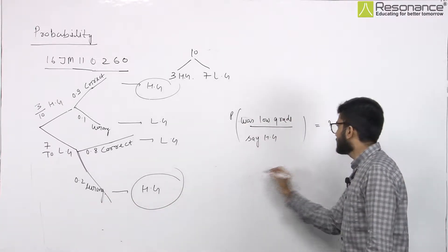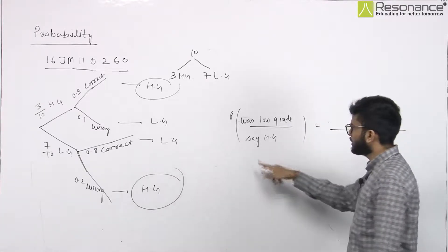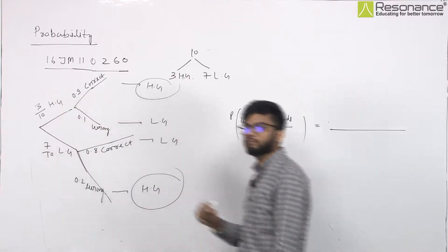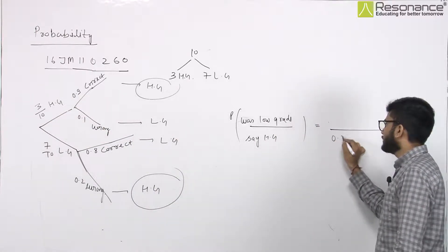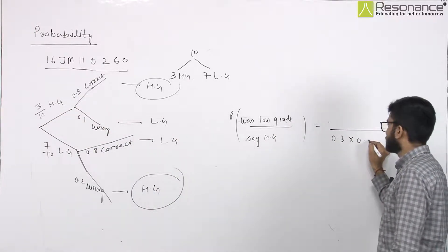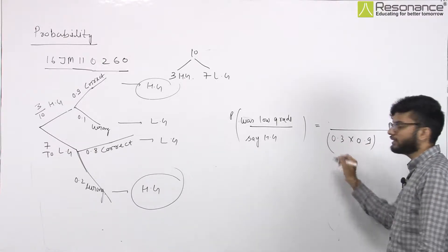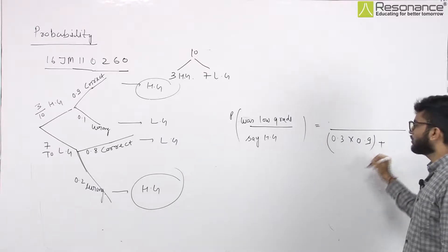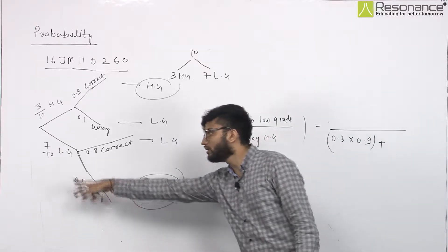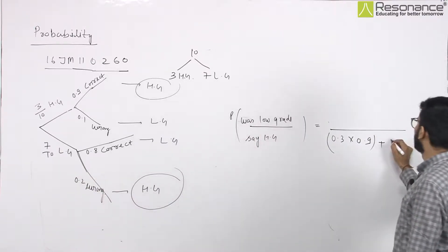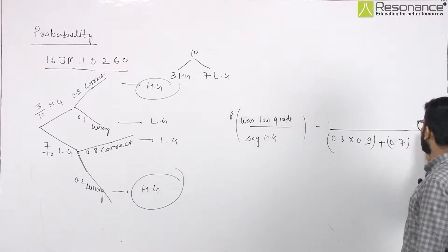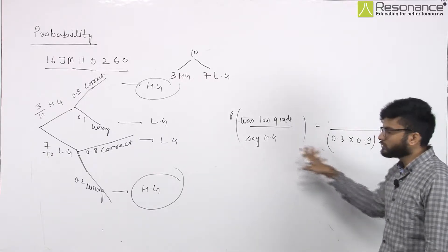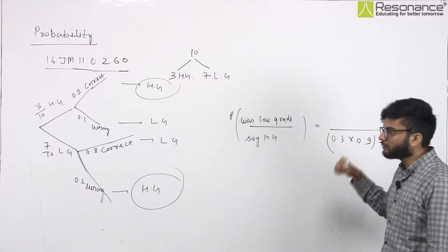So if we have a chance of high-grade, 0.3 into 0.9. These are my chances. 0.3 means high-grade and correct, plus, and what else can it be? 0.7 into 0.2. This is our chances. Now, this is your total chances when high-grade was possible.